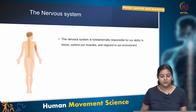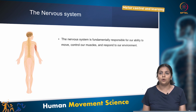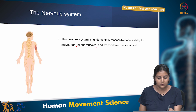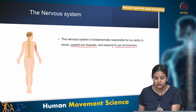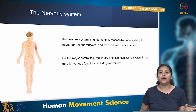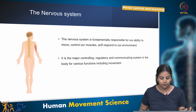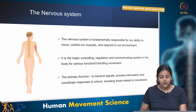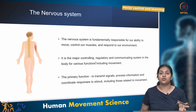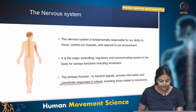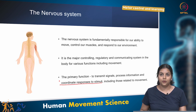Quick recap on the nervous system, which we studied in module 2. It is fundamentally responsible for our ability to move, control our muscles and respond to the environment. It is the major controlling, regulatory and communicating system in the body for various functions, specifically including movement. The primary function of the nervous system is to transmit signals, process information and coordinate responses to stimuli, including those related to movement.